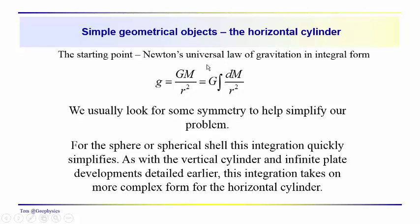We come back to Newton's universal law of gravitation. Remember with the sphere, no integration was required — we just had rho times dV, where dV was four-thirds pi R cubed, basically the volume, where that R is a capital R different from the distance from the center of the sphere to the point of observation. In the case of the horizontal cylinder, we have a differential mass, so we'll have density times a differential volume.